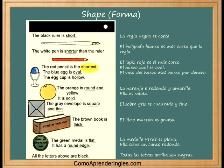The blue egg is oval. The egg cup is hollow. The orange is round and yellow, and it is solid.